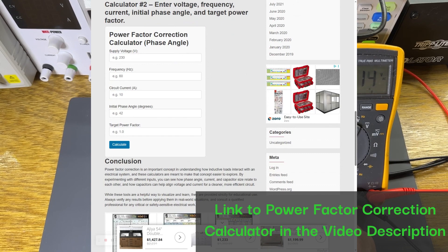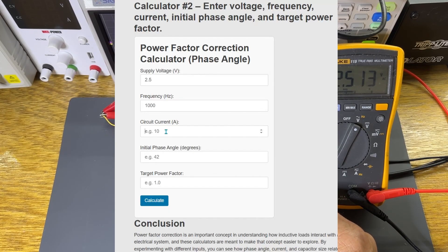I'll plug the numbers into the calculator here. Supply voltage, 2.5 volts. Frequency of the supply, 1000 hertz. The measured circuit current is about 48 milliamps. The phase angle, although it is jumping around a little bit, I came up with about 53 degrees lagging.